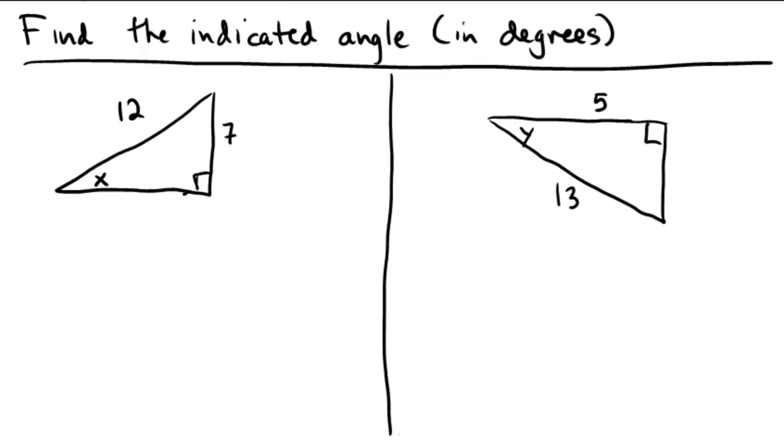We have x as the angle in this picture, we have an opposite side labeled as 7, and we have a hypotenuse labeled as 12. So we have an opposite and a hypotenuse, so we are going to use the ratio of sine here and say that sine of x equals opposite 7 over hypotenuse 12.